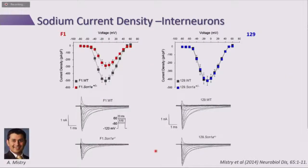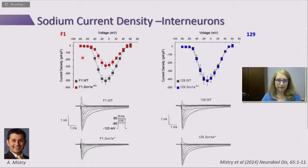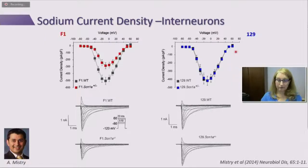We can also see strain dependence at the level of individual neurons. From whole cell sodium current recordings from hippocampal interneurons, neurons isolated from F1 knockout mice show decreased sodium current density compared to their wild type littermates. In contrast, when we isolate neurons from the 129 mice that don't express an epilepsy phenotype, we see no difference between wild type and knockout neurons. So this phenotype difference is even seen at the interneuron level.